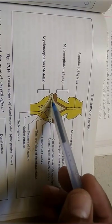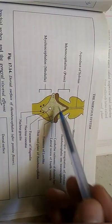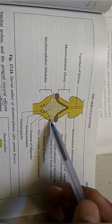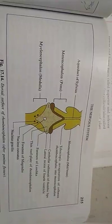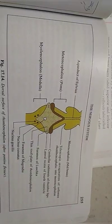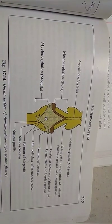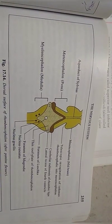In certain areas, the ependymal roof projects outwards, finally bulges, and ruptures. The ruptured part forms the foramen of Luschka. Through this foramen of Luschka, cerebrospinal fluid passes from the 4th ventricle into the subarachnoid cisterns.